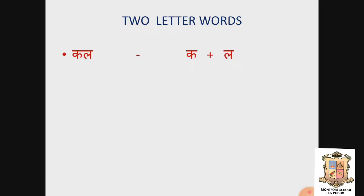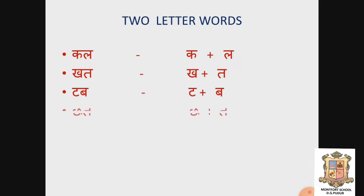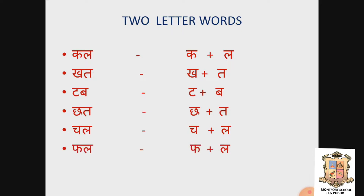Let me show you some examples of two-letter and three-letter words using only vowels and consonants. Two-letter words: K plus L — Kal; K plus Ta — Khat; T plus Ba — Tab; Cha plus Ta — Chad; Cha plus La — Chal; Fa plus La — Fal.